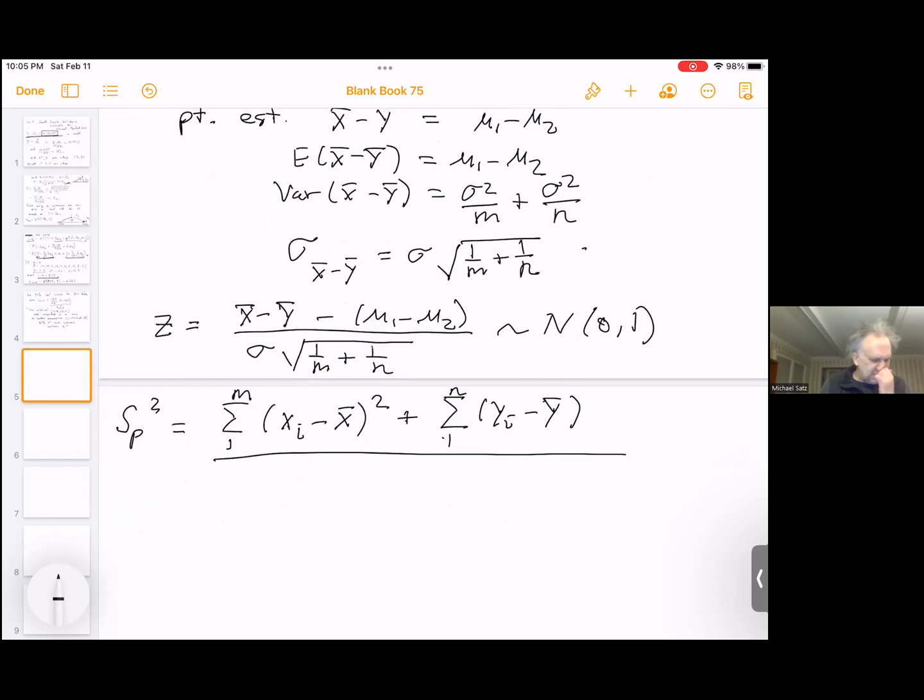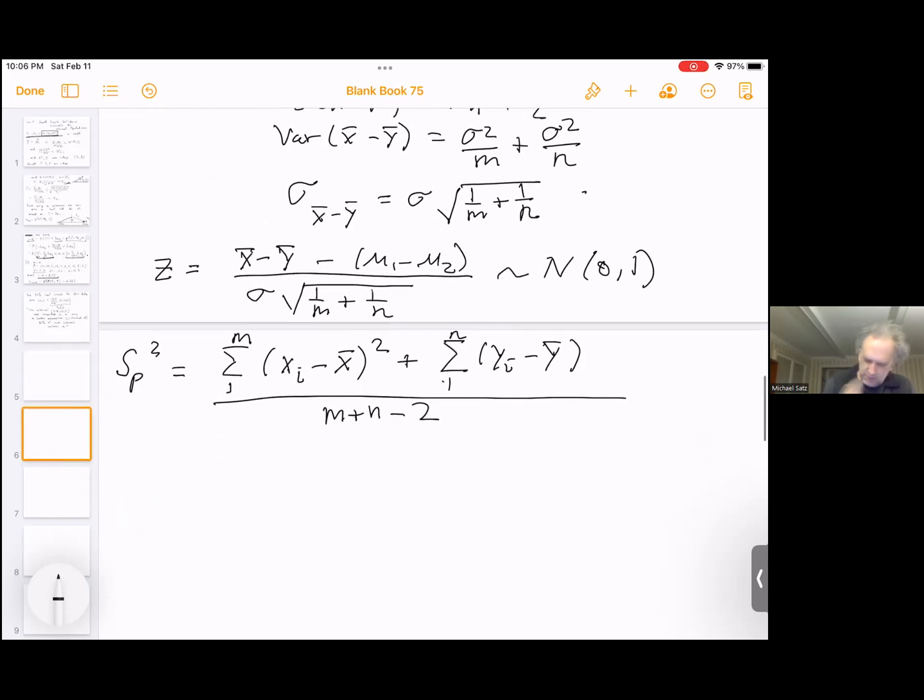I do want to collect all these squared errors here, and then I want to divide by the total freedom here, and I lose one freedom with each of these sums here. So on the bottom, I want to have, I lose one each, so I have m plus n terms minus 2. So this should be m plus n minus 2.